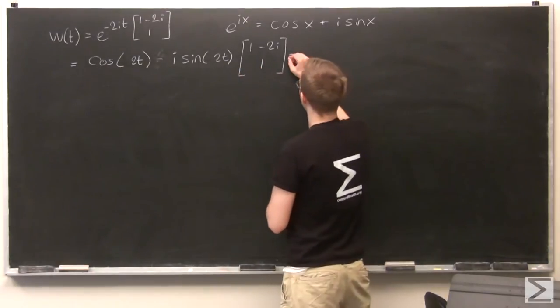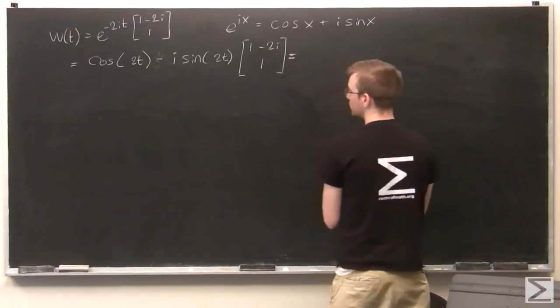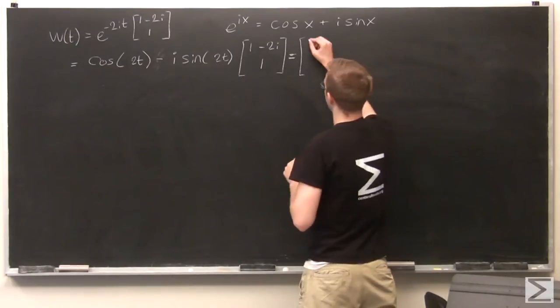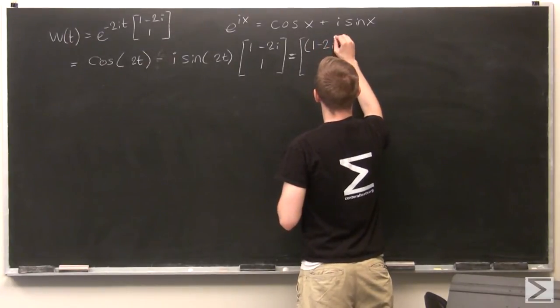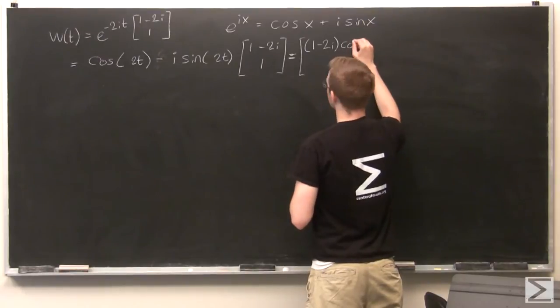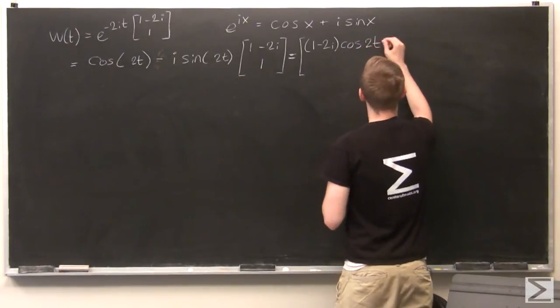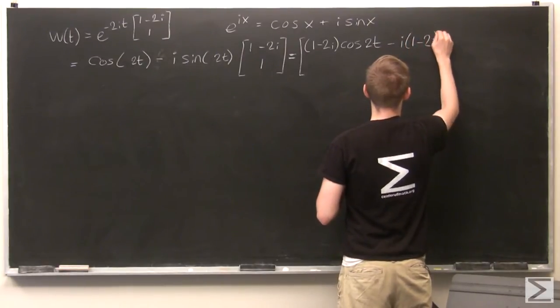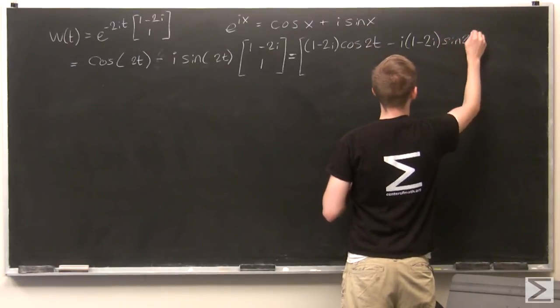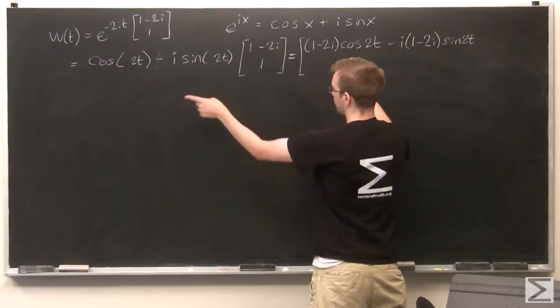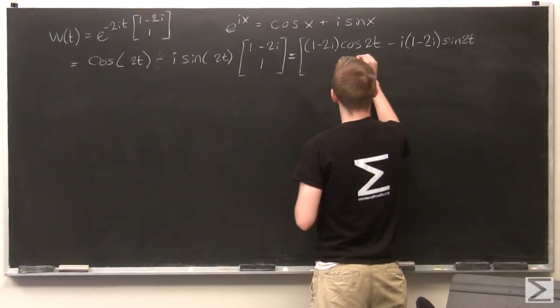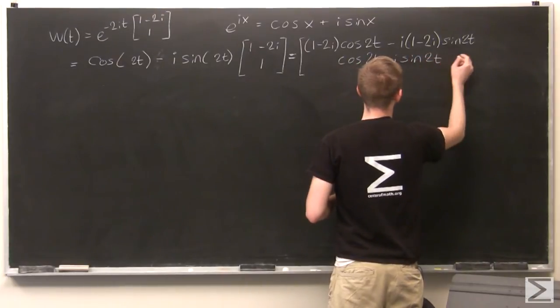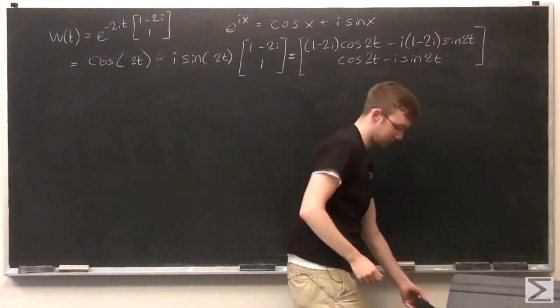This is just going to become one big 2 by 1 matrix. And I'm going to have (1-2i)*cosine(2t) - i*(1-2i)*sine(2t), and on the bottom is the same thing multiplied by 1, cosine(2t) - i*sine(2t).